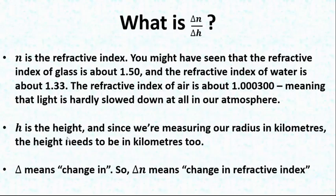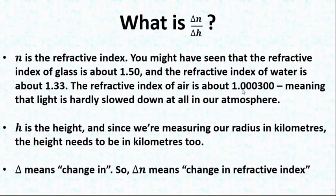N is the refractive index. You've probably seen that the refractive index of glass is about 1.50, and the refractive index of water is about 1.33. The refractive index of air is only a tiny, tiny bit above 1 — so 1.000300. The refractive index is a measure not only of how much light will bend, but how much light is slowed down in a particular medium. So a refractive index of 1.000300 just means that light is very barely slowed down in our atmosphere and only just bends a little bit relative to something like glass or water.